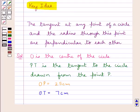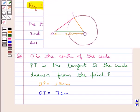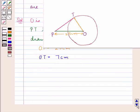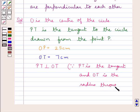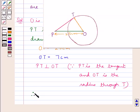Now from the key idea, we have that the tangent at any point of a circle and the radius through this point are perpendicular to each other. So according to this key idea, PT would be perpendicular to OT. That is, the tangent PT is perpendicular to the radius OT, since this PT is the tangent and OT is the radius through the point T. And therefore, since PT and OT are perpendicular, we have angle OTP would be equal to 90 degrees.